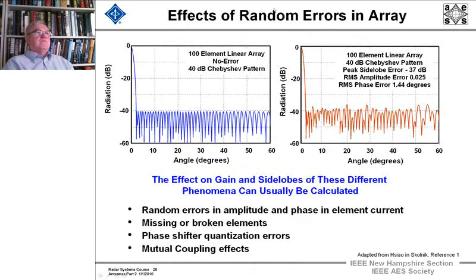And here's the effect of random errors in arrays, another example of a 40 dB Chebyshev pattern on a 100 element array with no errors in the phase shifts. But if we have random errors in amplitude and phase and the element current that can be due to broken or missing elements too, phase shifter quantization errors, multiple mutual coupling effects, which we'll get to later.